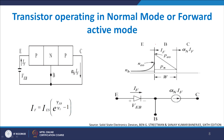In the normal forward active mode, the minority carrier concentration decreases linearly from the emitter-base to the collector-base junction, going to 0 near the collector, since the collector removes all electrons from the junction. Due to recombination in the base, the profile is not perfectly straight but bends slightly. In the model, VBE represents the forward emitter-base bias, IF is the forward current, and αN×IF is the resulting collector current.